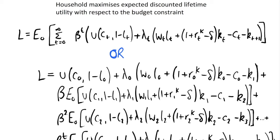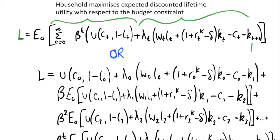They are maximizing this objective function, which is their expected lifetime utility, discounted at the discount factor beta. It's an infinite sum, and here we have a Lagrangian, so we are maximizing with respect to our constraint — the budget constraint derived in the last video — with the Lagrange multiplier lambda_t. All the subscripts are period t except for capital, because we look at capital in the next period: we invest in period t and get our capital in period t plus 1.